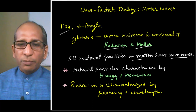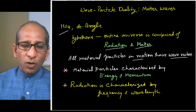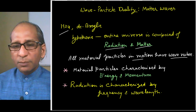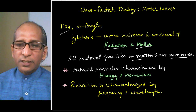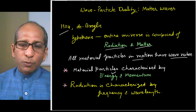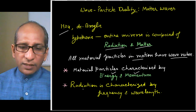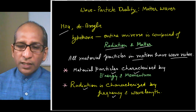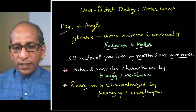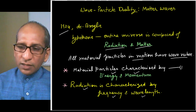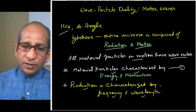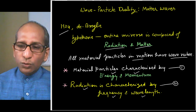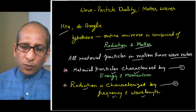When we study and characterize matter, two parameters are important: energy and momentum. When we study and characterize radiation, the important parameters are frequency and wavelength. So for a materialistic particle we study energy and momentum, and for radiation we study frequency and wavelength.